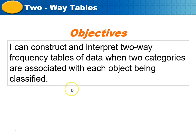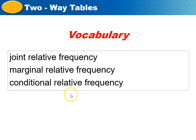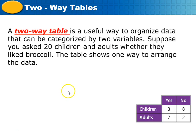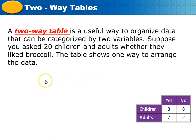That's our objective today. Our vocab terms are: joint relative frequency, marginal relative frequency, and conditional relative frequency. The very first thing we're going to do is define those. A two-way table is a useful way to organize data that can be categorized by two variables. Suppose you ask children and adults whether they like broccoli — the table shows one way to arrange the data.